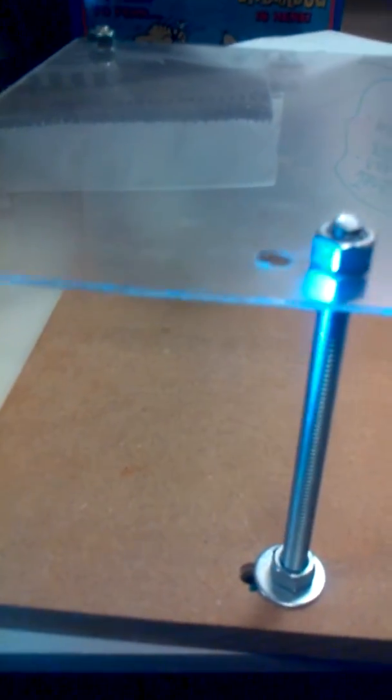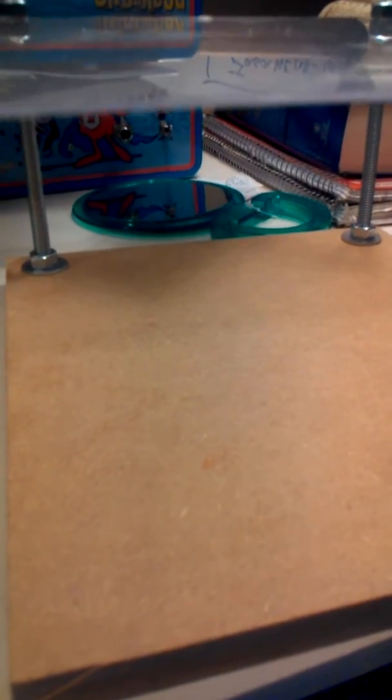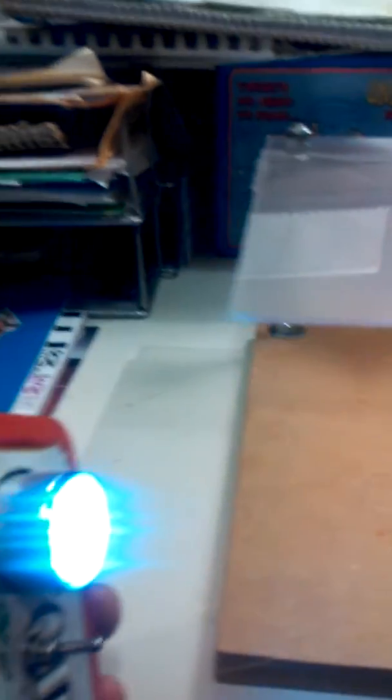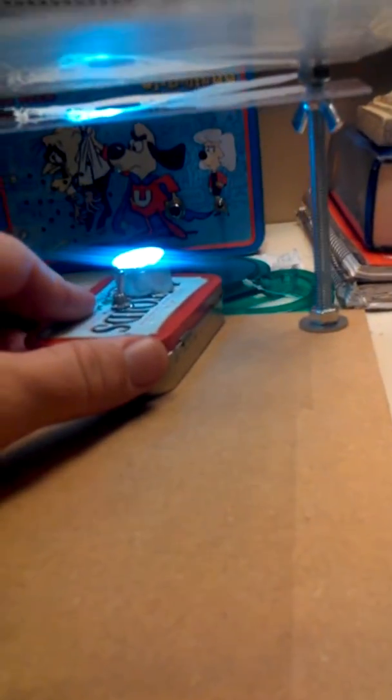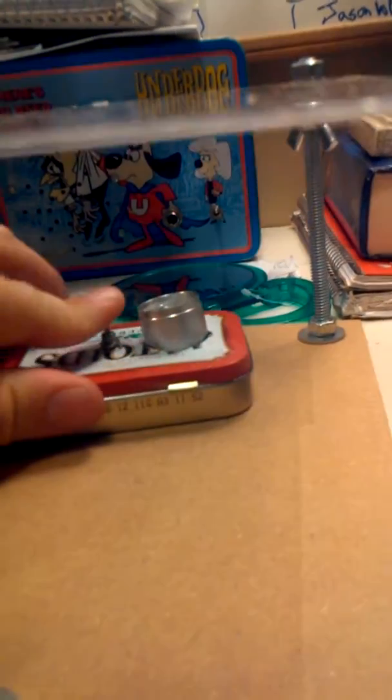And most microscopes have a light down there to backlight specimens. But I just built an Altoids flashlight that I can put under here like this and move it around. Then I'll switch it on.